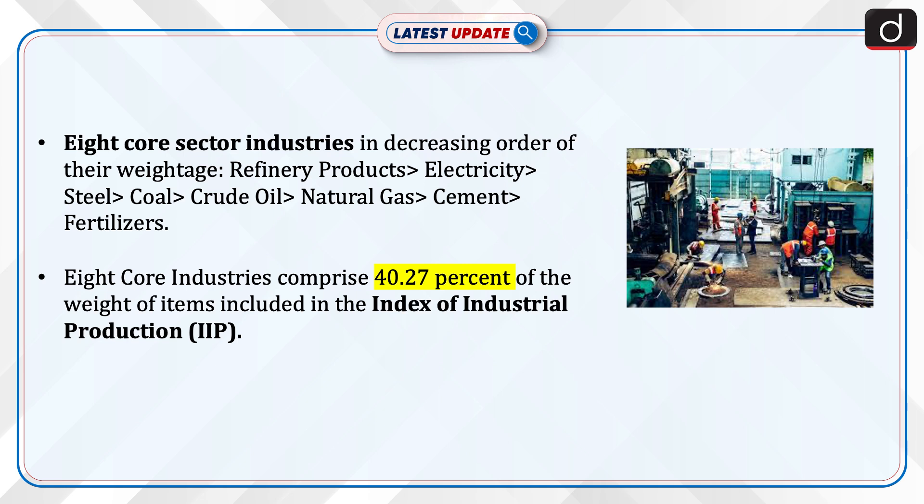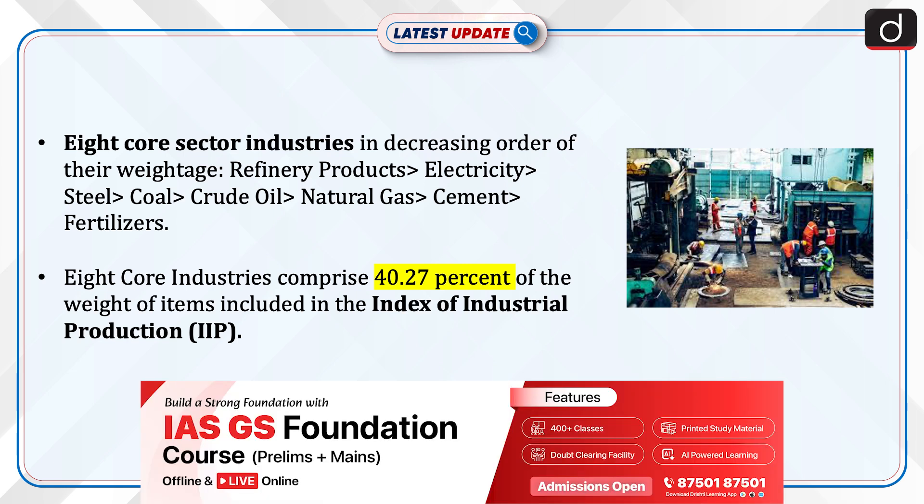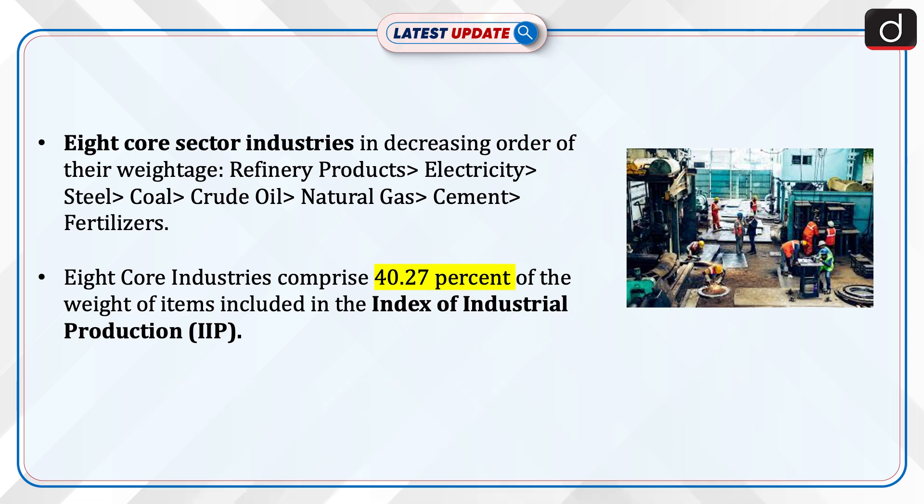The eight core sector industries in decreasing order of their weightage are: refinery products, electricity, steel, coal, crude oil, natural gas, cement, and fertilizers. The eight core industries comprise 40.27% of the weight of items included in the Index of Industrial Production.